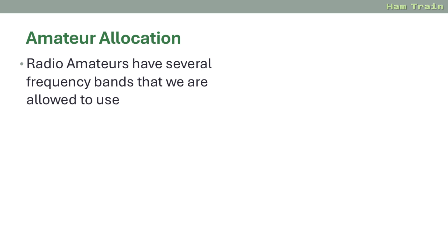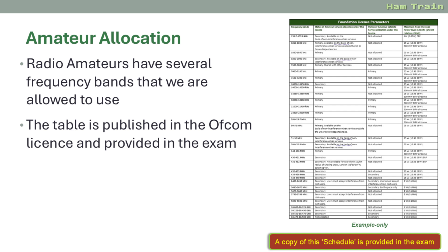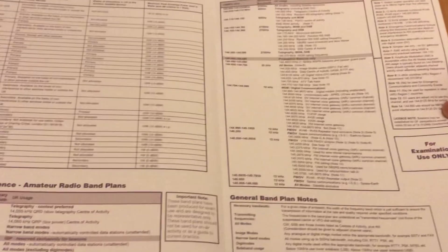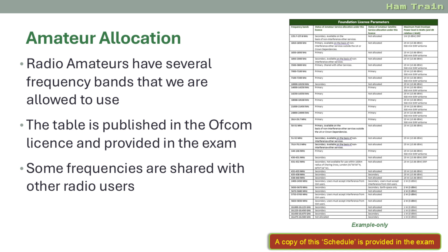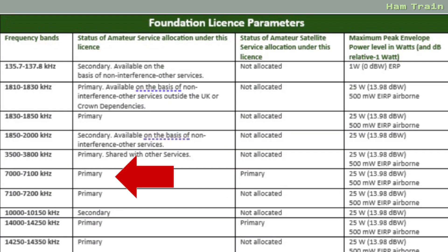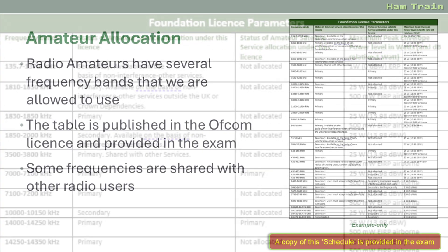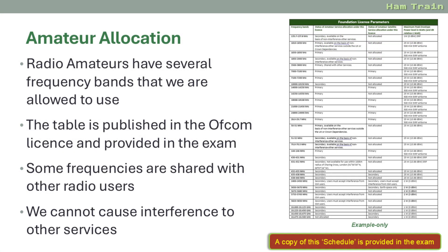Radio amateur operators are given an allocation, and there are several bands we can use. On the screen is the Foundation licence parameters table, published by Ofcom in the amateur radio licence and provided in the exam booklet you can take into your exam. Some frequencies are shared with other users. The table shows whether frequencies are available for primary or secondary use. If it's secondary use, amateurs are sharing the band with other users. A core requirement is not to cause interference with other services.